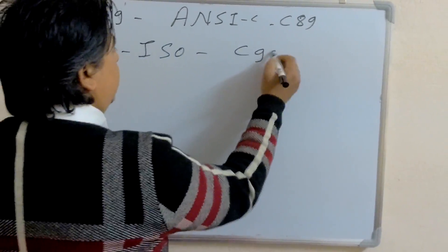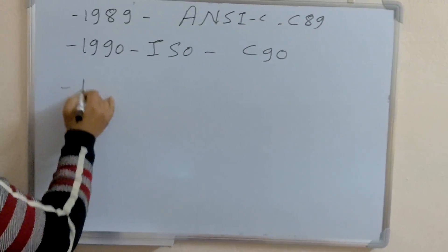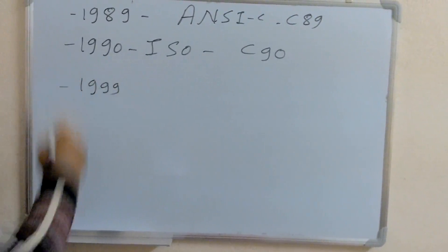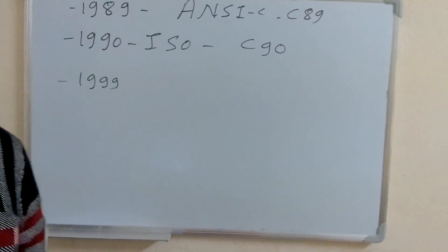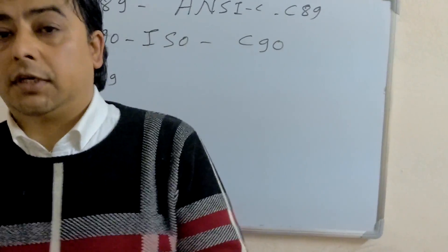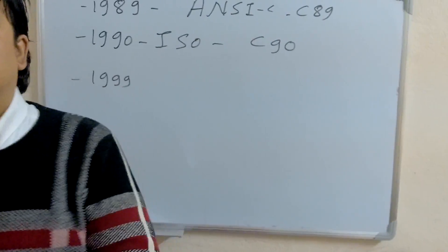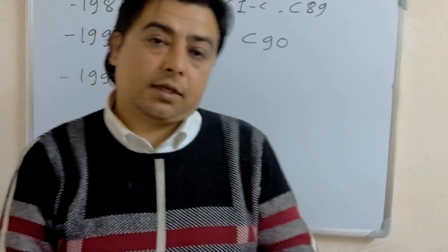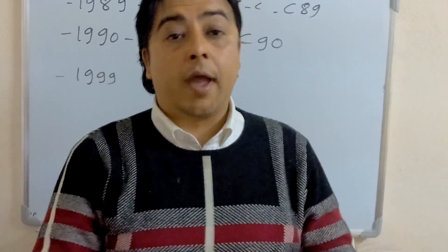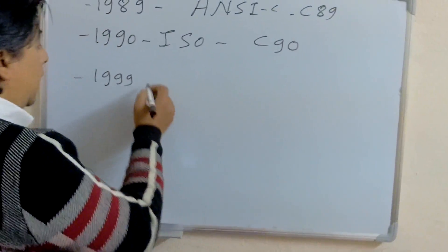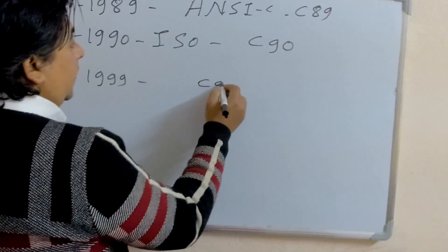In 1999, several features like inline function, new data types, and flexible array were added in C programming, that is known as C99.